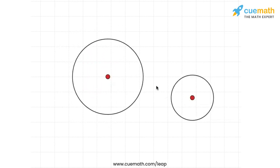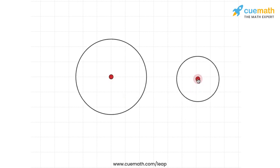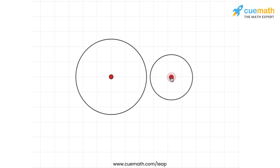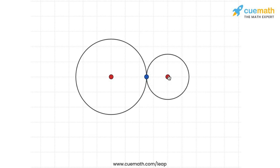Now let me bring this smaller circle closer to the larger circle. At some point the two circles will just touch each other, and in such a configuration there is one common point — the point at which the two circles touch each other.